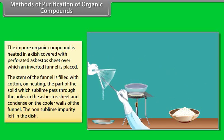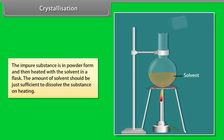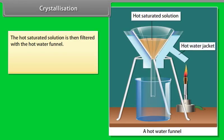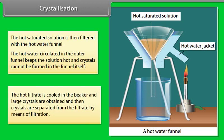Crystallization: It is the most common way of purification of organic solids. It is based on the difference in the solubility of the organic compound in the solvent. The impure substance is powdered and heated with solvent in a flask — the amount of solvent should be just sufficient to dissolve the substance on heating. The hot saturated solution is filtered with a hot water funnel, keeping the solution hot so crystals cannot form in the funnel. The hot filtrate is then cooled in the beaker, large crystals are obtained, and separated from the filtrate by filtration.